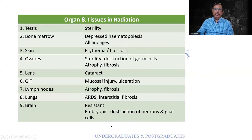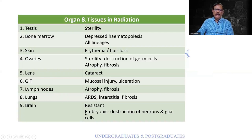A simplified table for easy remembering: testicular sterility, bone marrow suppression, skin erythema, ovarian sterility, lens cataract at around 8 Gy, mucosal injury, lymph node atrophy and fibrosis, ARDS, and brain effects. The brain is usually resistant, but in embryonic cases — the fetus or a child — there can be destruction of neuronal or glial cells.